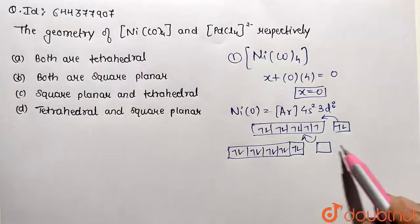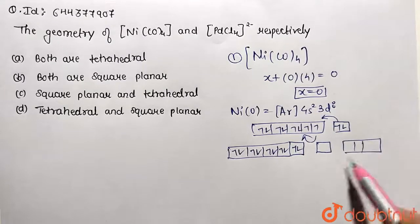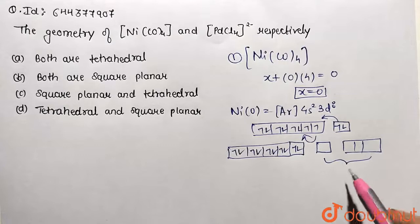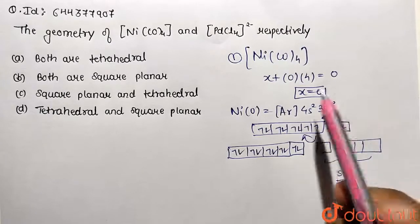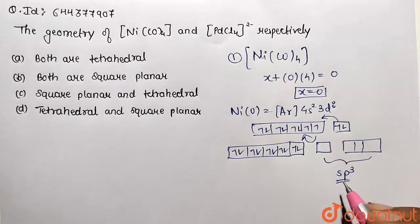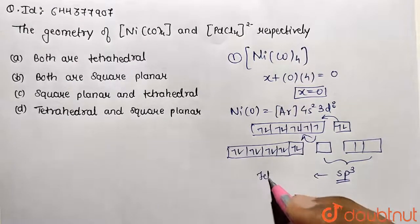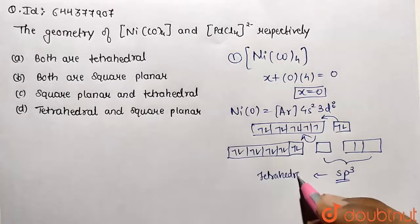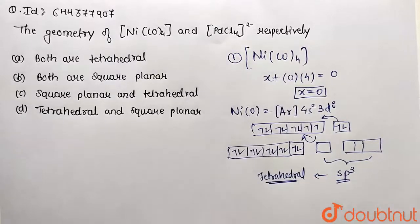With 4s vacant and 4p already vacant, it undergoes sp³ hybridization to accommodate four CO ligands. This sp³ hybridization results in tetrahedral geometry.